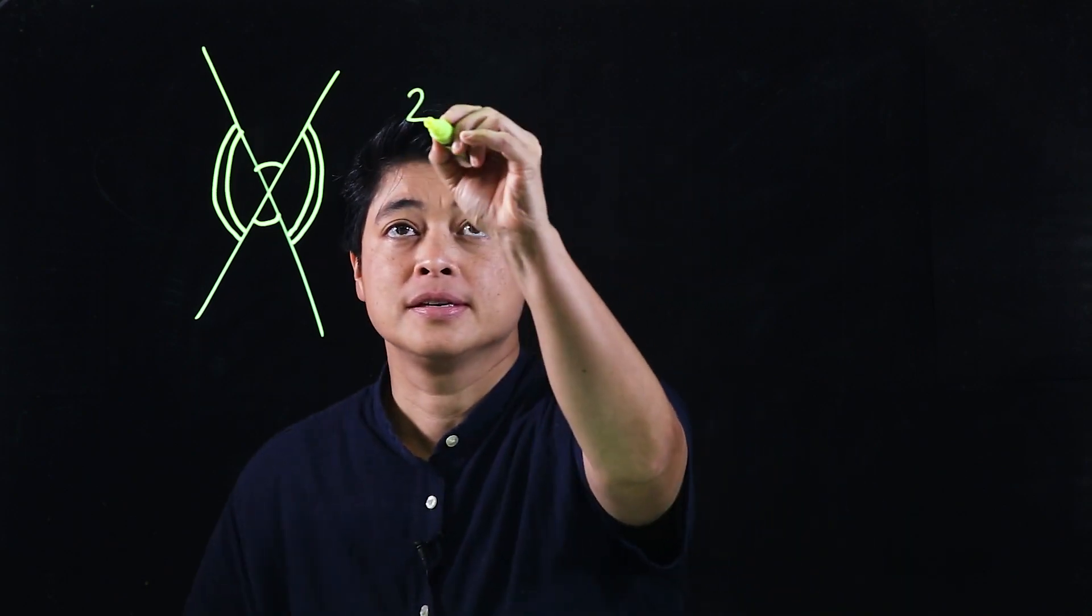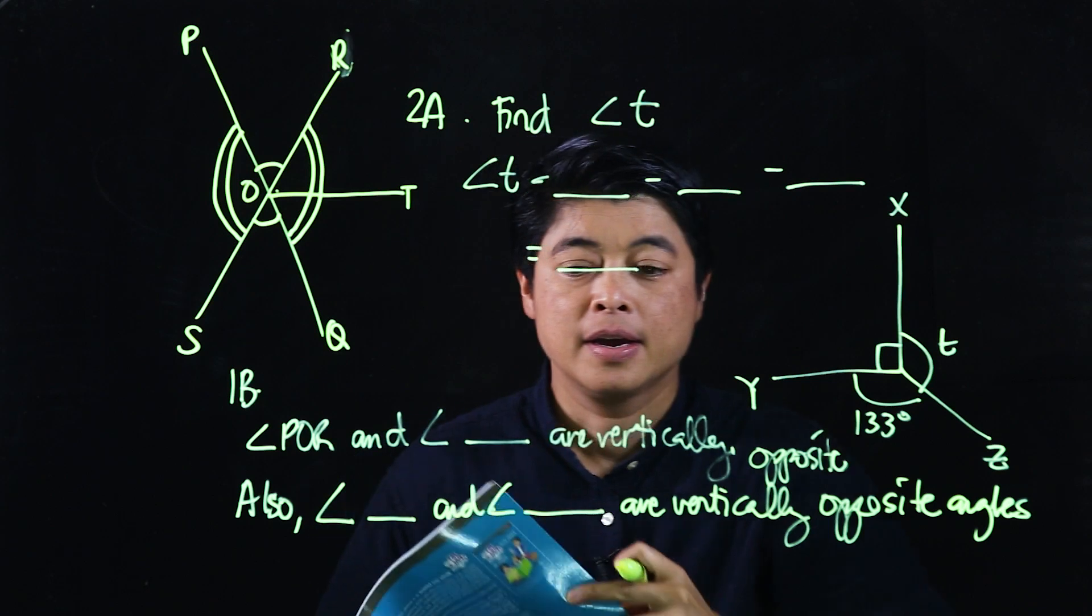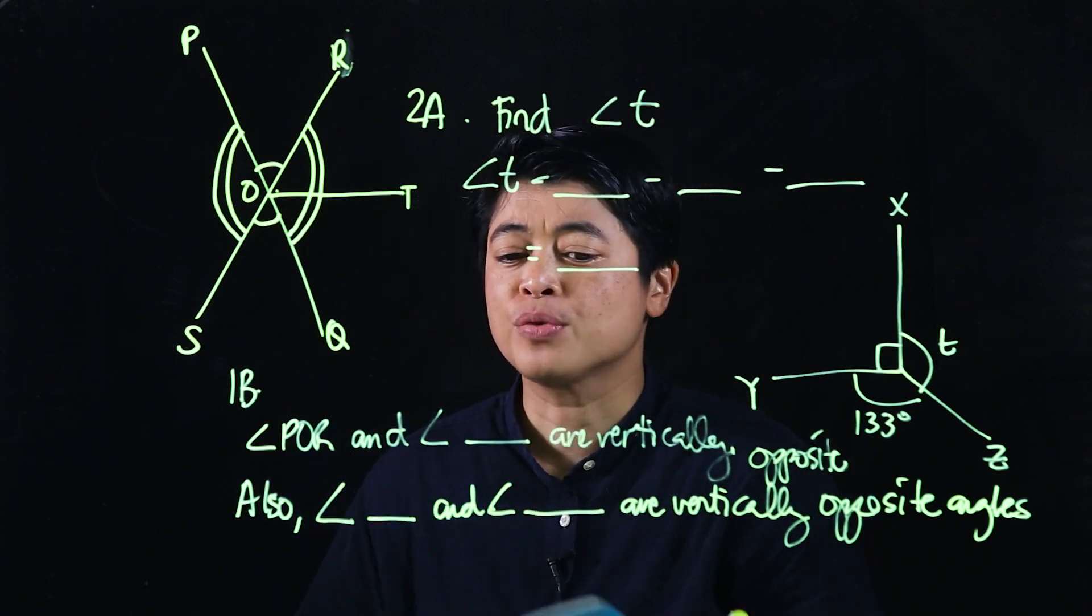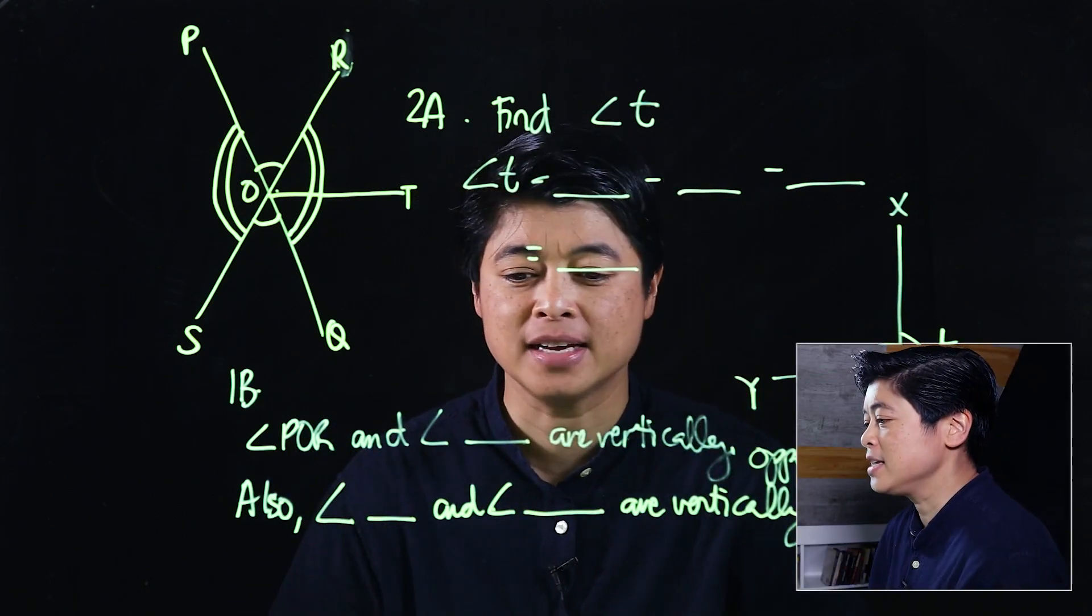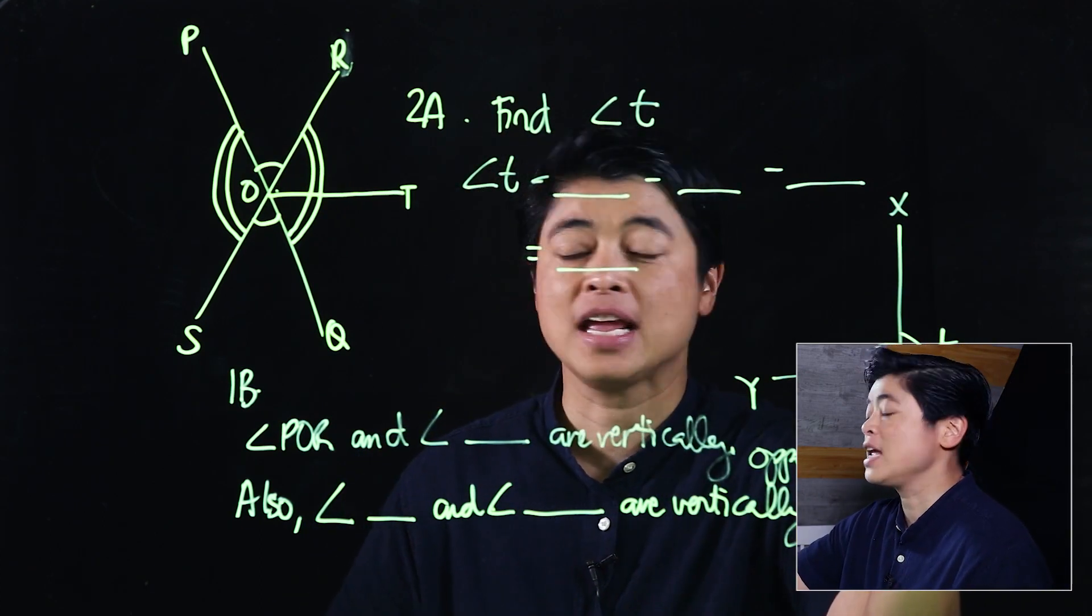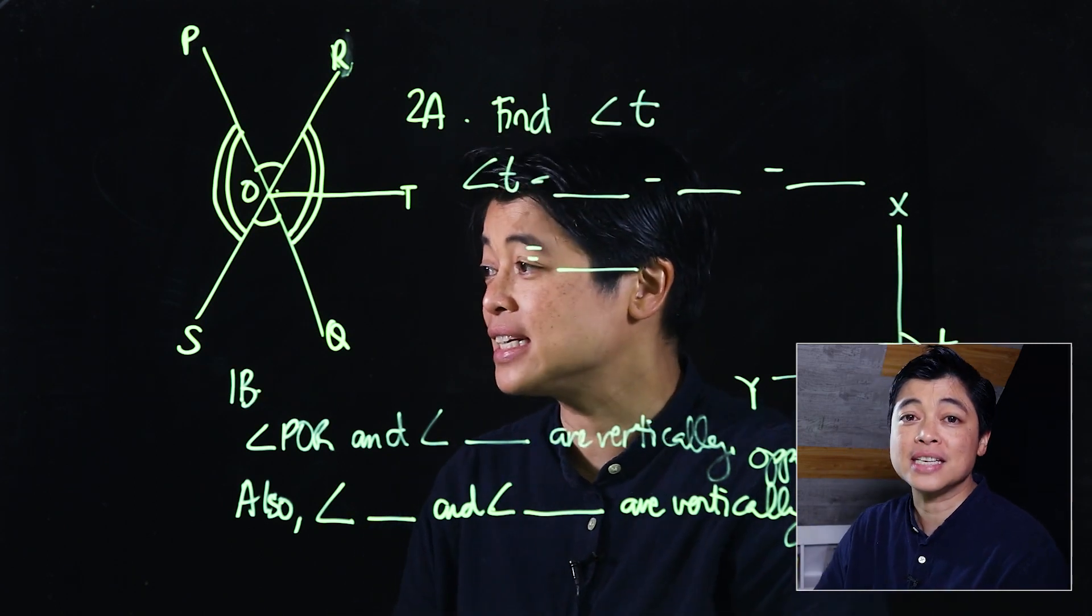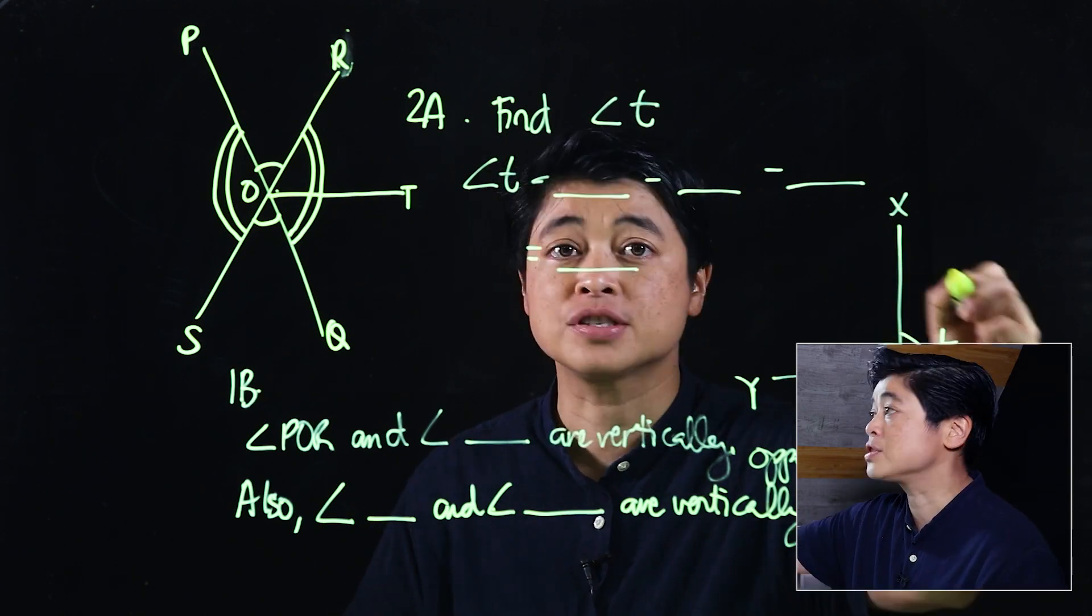Continuing on to page 107 and 109, I will demonstrate the other two properties that I mentioned earlier. On page 107, problem 2A says find angle T. This is a point, so around that point is 360 degrees, so meaning a full circle.